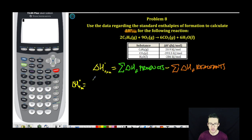As you take a look, we're going to start with our products here. We've got six moles of CO2. We're going to multiply that by the number negative 393.5. Notice that the heats of formation are given to us in kilojoules per mole. And since we have six moles of CO2, we need to multiply that value by six.